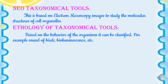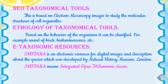Ethology as a taxonomical tool is based on the behavior of organisms — we can classify them into different groups. For example, based on the sound of birds or based on bioluminescence. Bioluminescence refers to the glowing of the body of an organism; some animals glow at night, and based on the emission of light we can classify them into different groups.